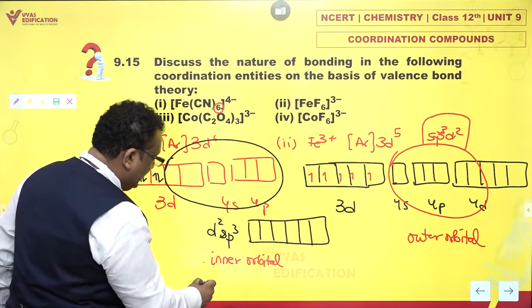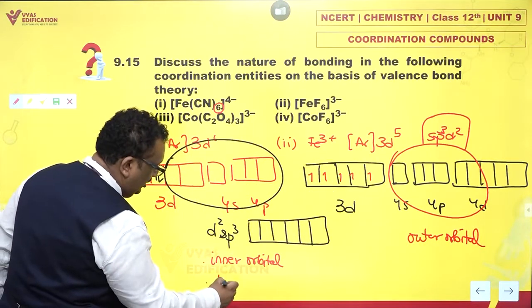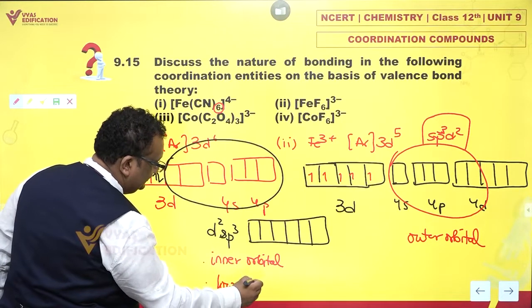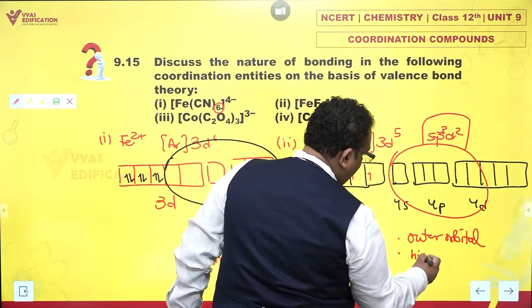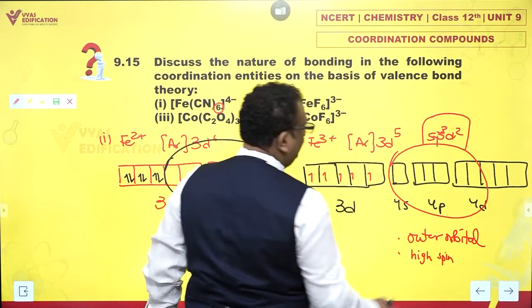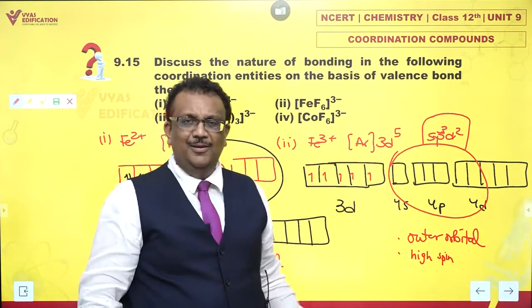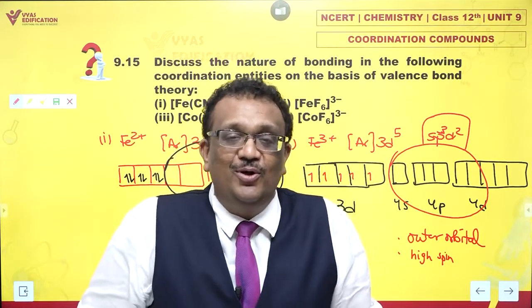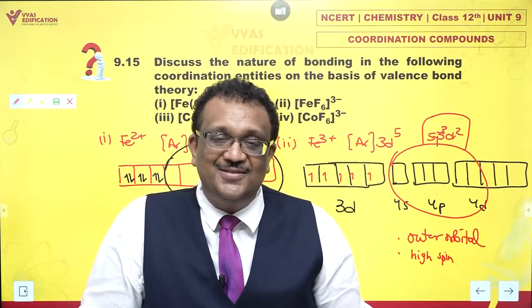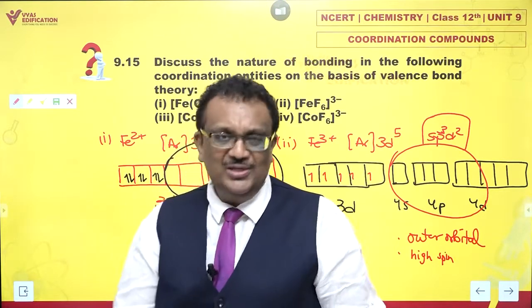This is inner orbital. This is outer orbital complex. Then in this case, because there is pairing, this is called low spin. And in this case there is no pairing, so this is called high spin. That's it. Have you finished the description? This is the valence bond theory description of two complexes. What about the other two? Let's take a look.